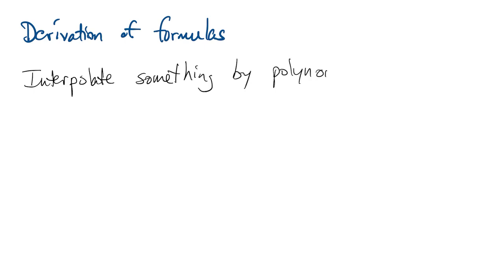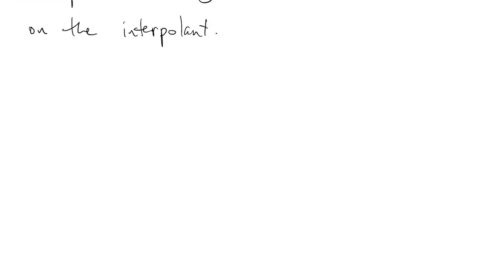Finally, let me say something about how these multi-step methods can be derived. It's a familiar pattern. We interpolate some data by a polynomial to represent a function that we don't know exactly. And then we do an operation on the interpolant in place of that function.